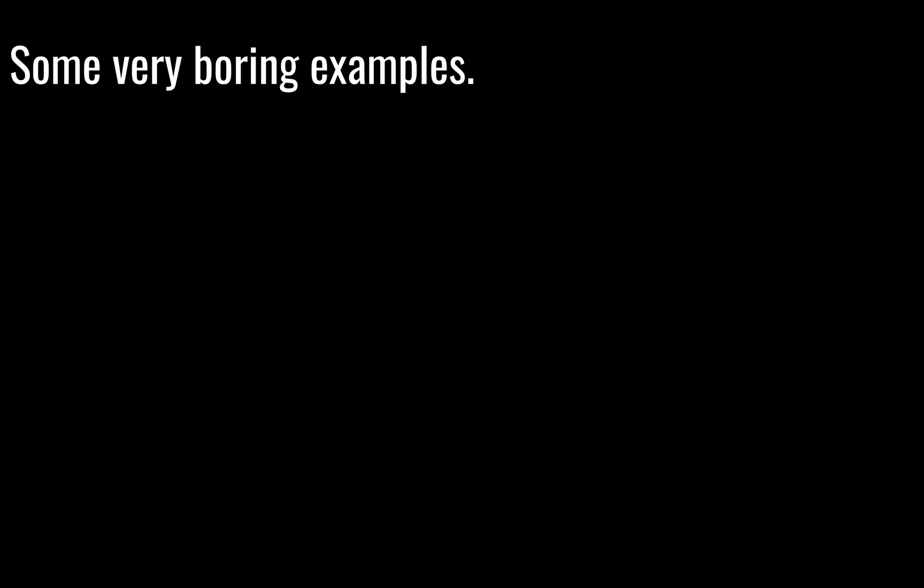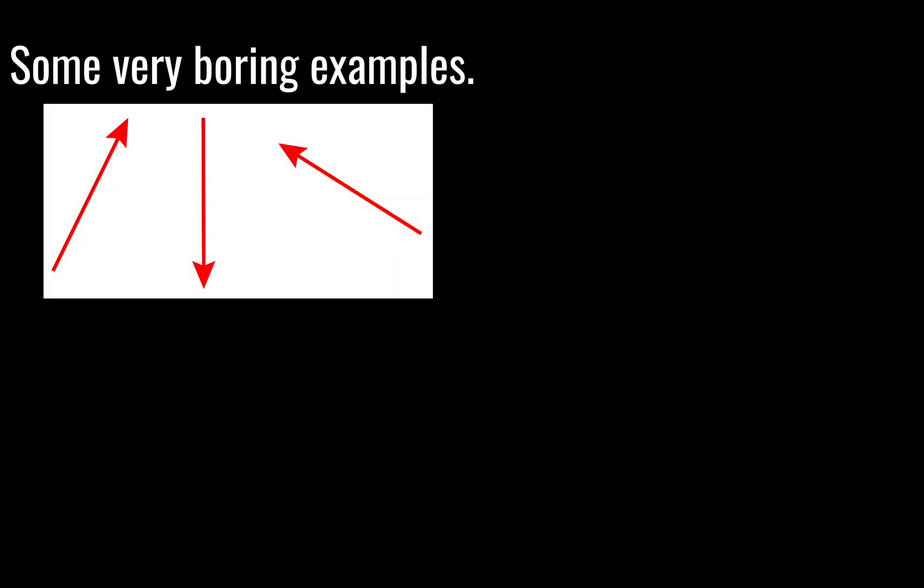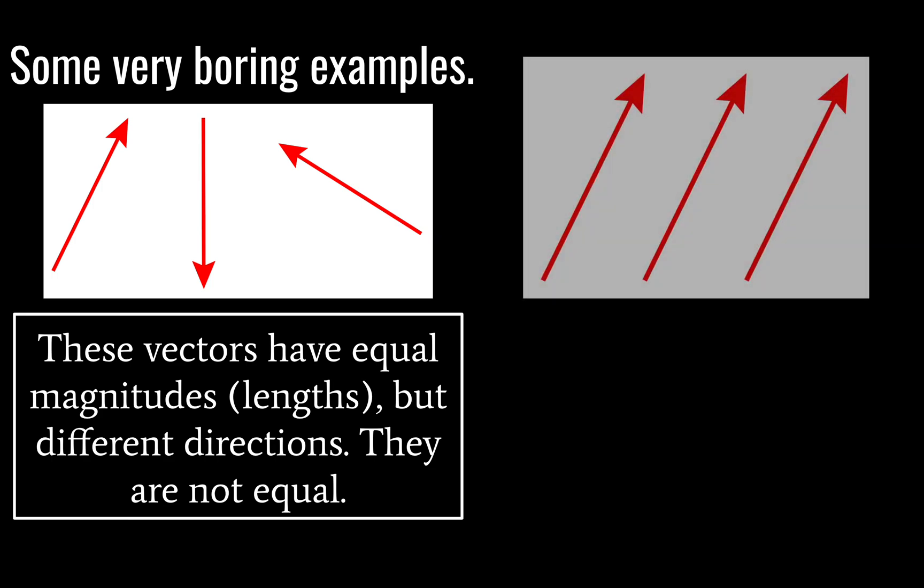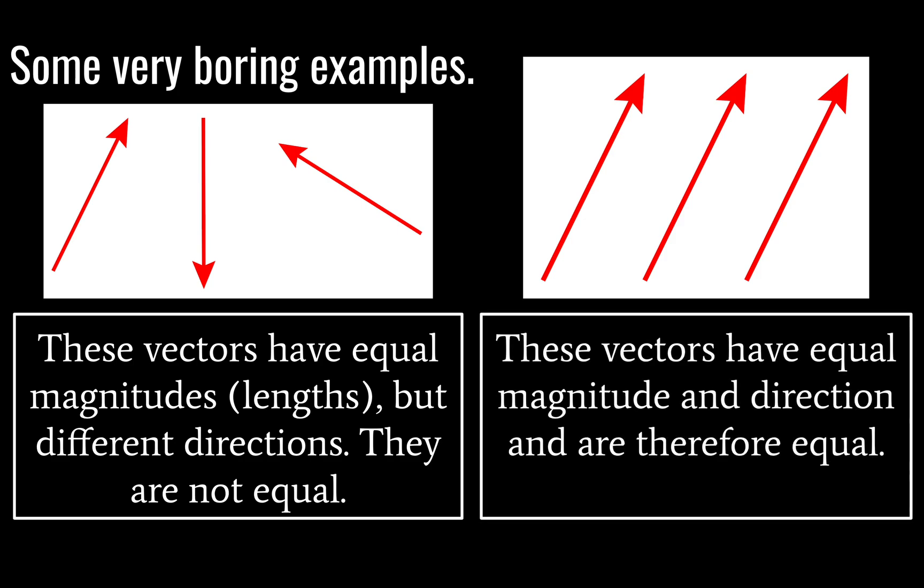Okay, so speaking of examples. Wow, look at that. Yeah, that's pretty boring. So here we have a few arrows and these vectors have equal magnitudes or lengths, but they have different directions. And so these vectors are not equal. Here, however, you see three arrows that have the same magnitude and are pointed in the same direction, and these are therefore equal.